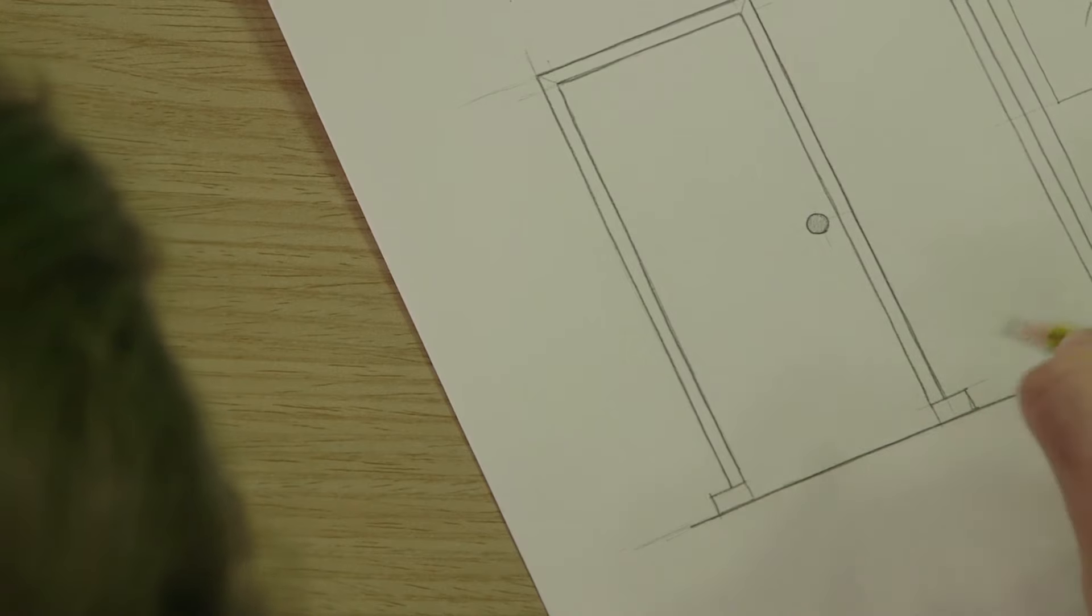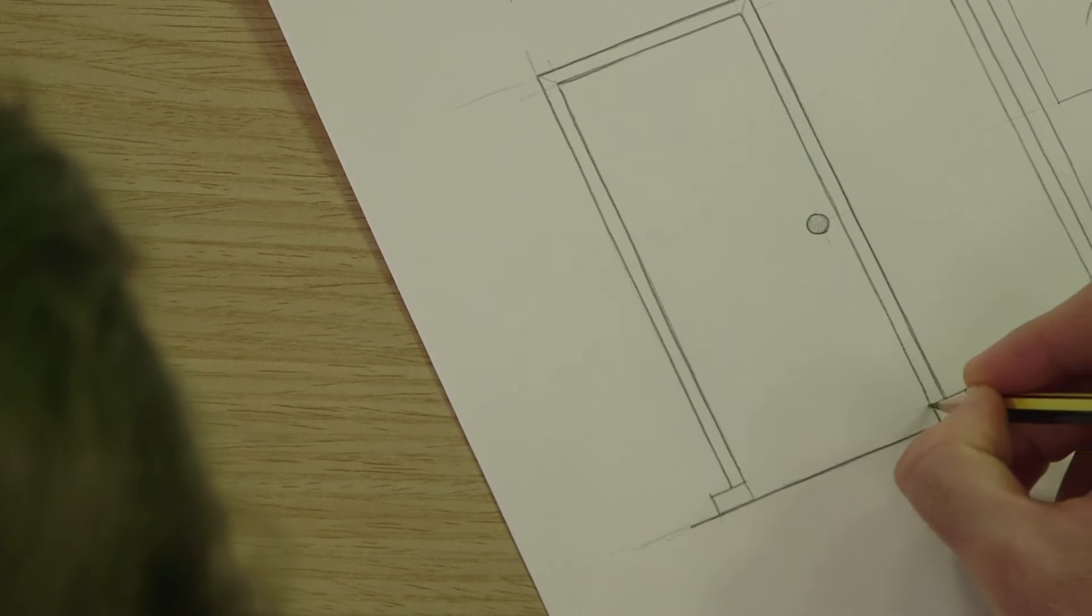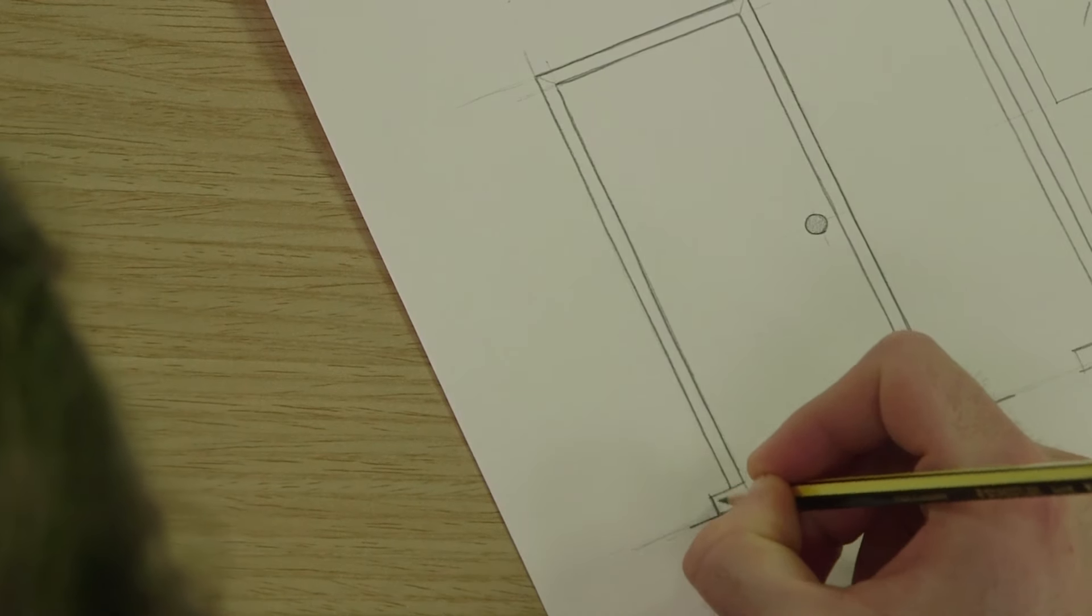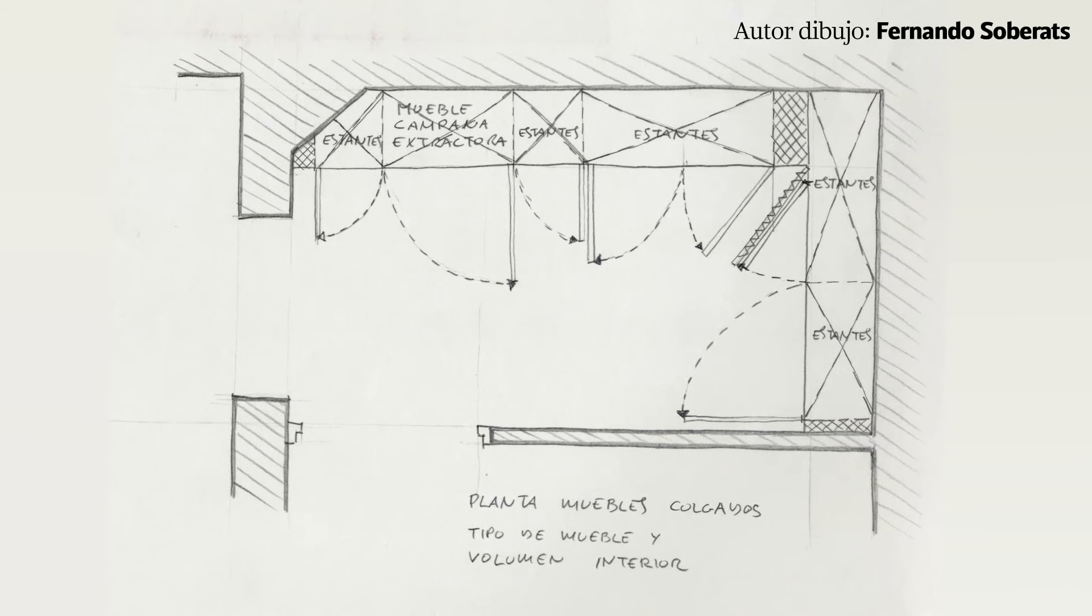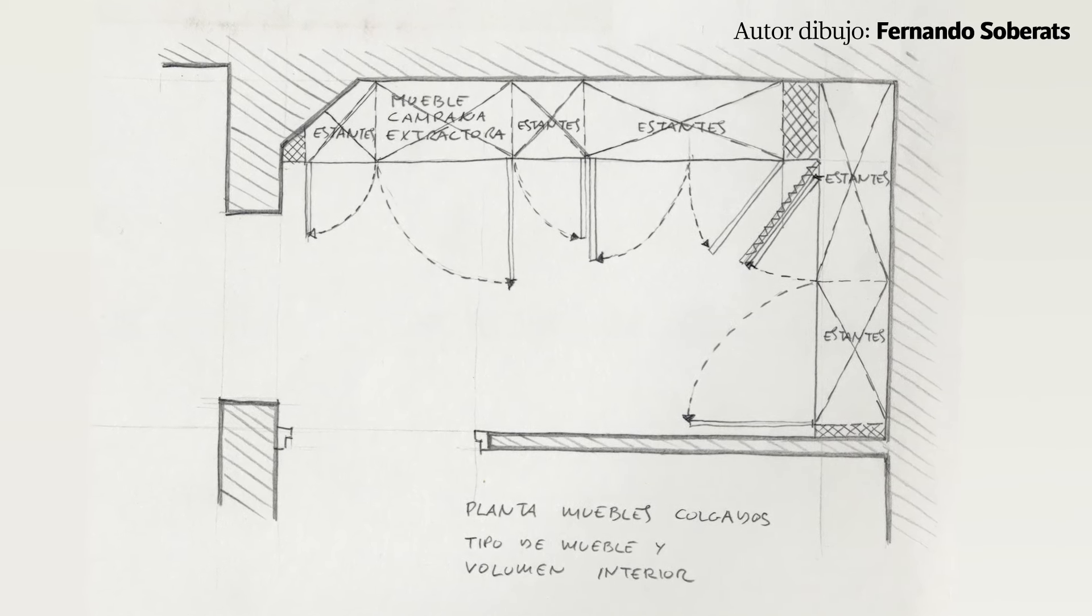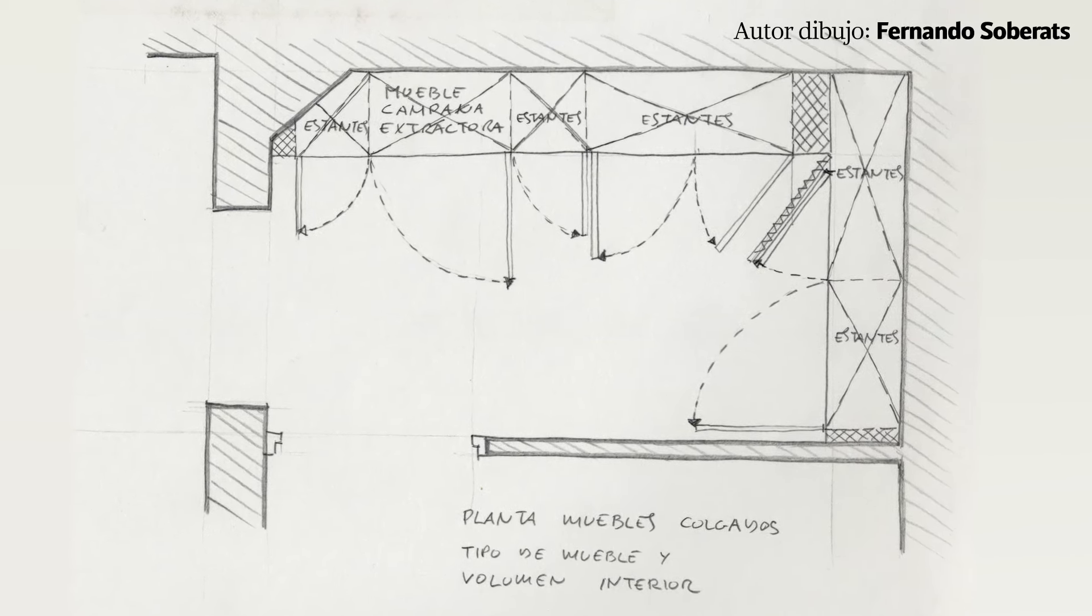Dibujar una puerta en alzado es muy similar a la puerta que ves en el modelo real. La diferencia a la hora de dibujar puertas vendrá en el momento en que la representes en una planta. En la planta indicaremos su colocación, tipo, modo de apertura y número de hojas.